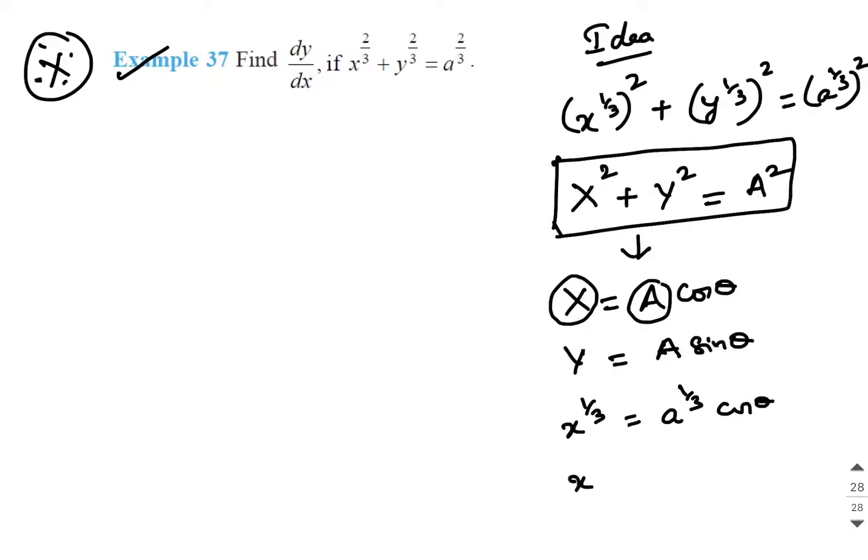So, what is the substitution we are supposed to do? X is equal to A cos cube theta. Similarly, if you do the same operation here, then you will understand that y should be substituted as A sin cube theta. This is the idea behind thinking on what value is supposed to be substituted.